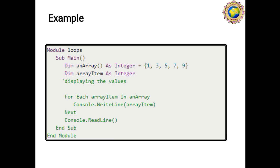Here the Dim keyword is used to declare two variables with their data types. 'Dim n() As Integer' declares an array, and 'Dim arrayItem As Integer' is our loop variable. To display the values, we use 'For Each arrayItem In n' and inside the loop, 'Console.WriteLine' is used — it prints the arrayItem and displays all data elements from the array.